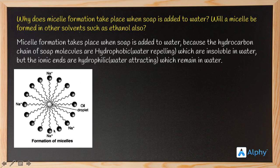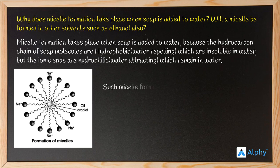The ionic part of the soap molecule is hydrophilic and remains attached to water. The tail part is hydrophobic and attaches to the oil, grease, or dirt particle present on the cloth. When the cloth is agitated in water, the micelle drops into the water, making it dirty but cleaning the cloth.